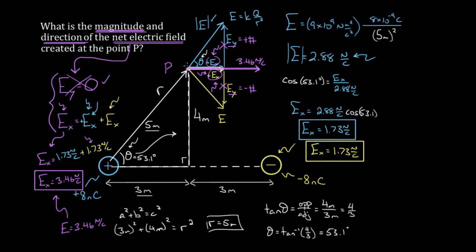To recap: when you have a 2D electric field problem, draw the field created by each charge and break those fields up into their individual components. If there's any symmetry involved, figure out which component cancels. Then, to find the net electric field, use the component that doesn't cancel, determine the contribution from each charge in that direction, and add or subtract them accordingly based on whether those components point right or left. That gives you your net electric field at that point created by both charges.